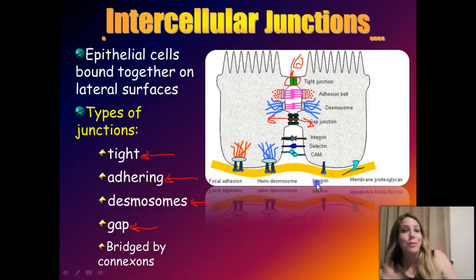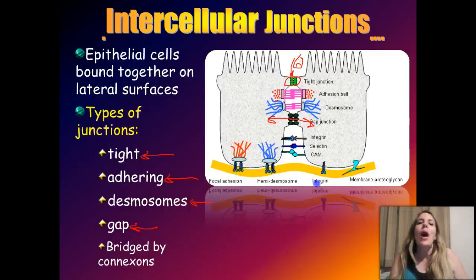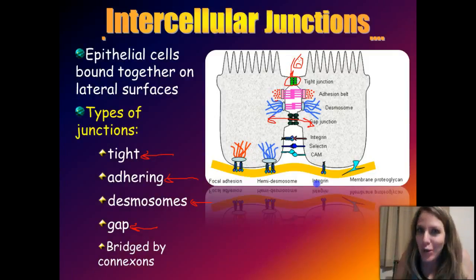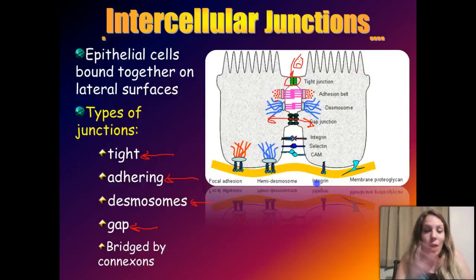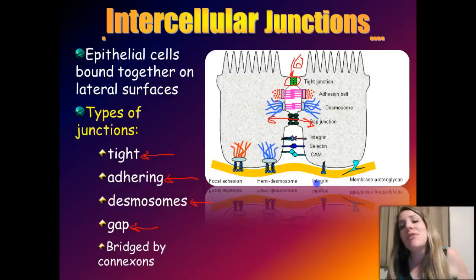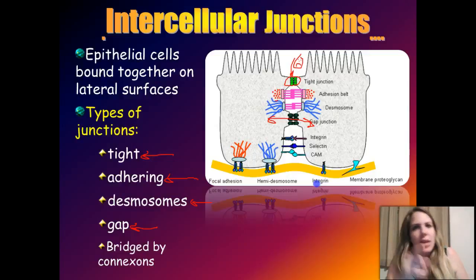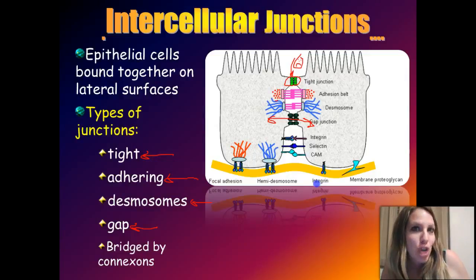Adhering junctions, also known as zonula adherens, have a similar band-like arrangement as tight junctions, located deep to them, with microfilament proteins from the cytoplasm acting as anchors for adjacent cells. Desmosomes, or macula adherens, are small button- or snap-like junctions forming at points of mechanical stress, and unlike tight and adhering junctions, they do not encircle the entire cell. Gap junctions are points where small pores called connexons connect the cytoplasm of adjacent cells, allowing small solutes like ions, glucose, and amino acids to pass between cells.